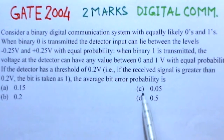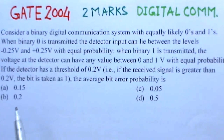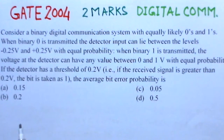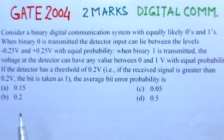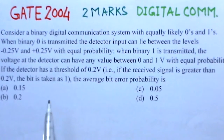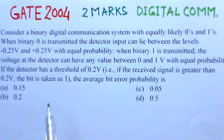The average bit error probability options are 0.15, 0.2, 0.05, and 0.5. We have to find which is the right option. This is a good problem and we'll revisit it to see what is given and what we have to find.